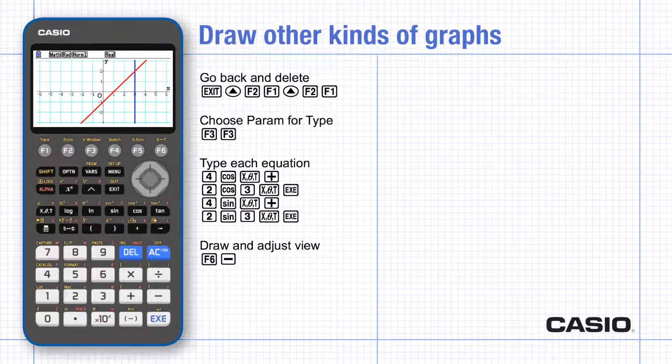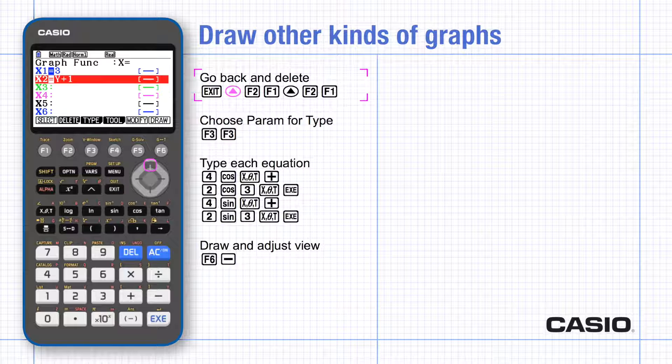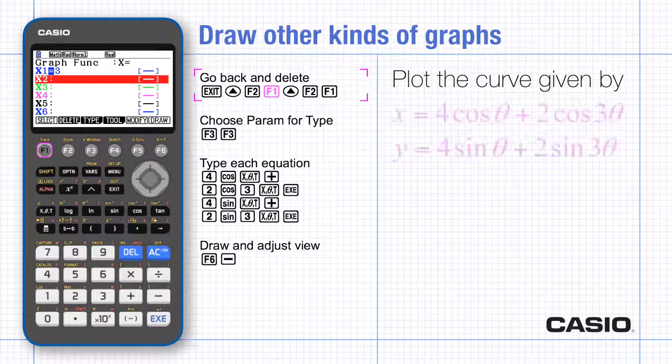The CG50 will also graph curves given parametrically. So go back and scroll up to delete the current equations. You'll need to use the F1 key to confirm.